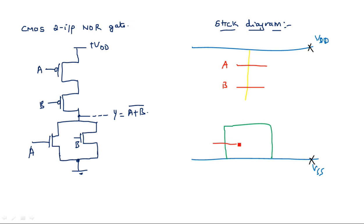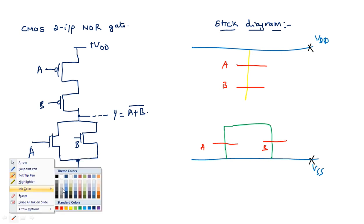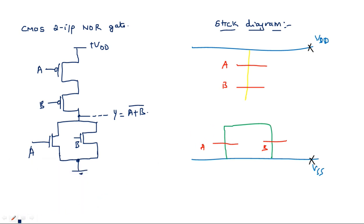Take one more polysilicon line for the NMOS transistor with input B. Now interconnect the wires and take the metal wire for the output. The metal wire, in blue color, goes from the center node and extends to give output Y is equal to A plus B bar. Wherever two different wire layers are joining, use a contact. Contacts are placed here, here, and two contacts at the bottom. This completes the stick diagram representation of the two-input NOR gate with CMOS realization.